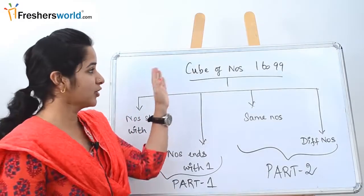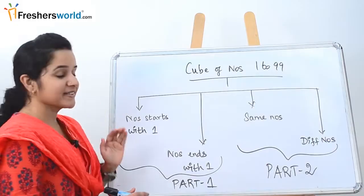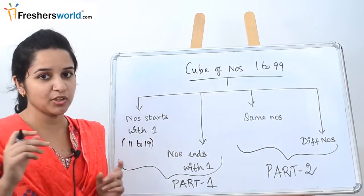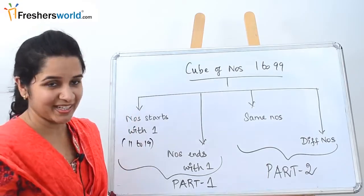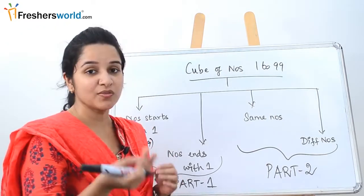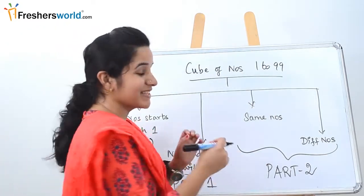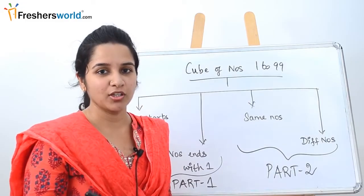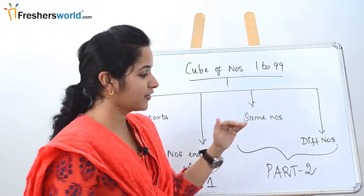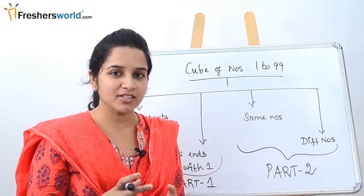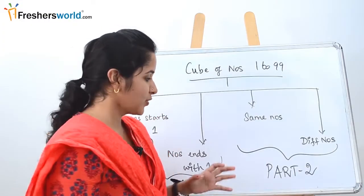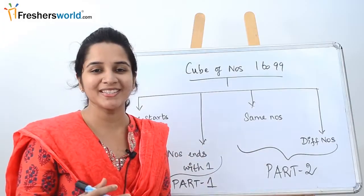We have 4 ways of solving cube numbers. They are split as follows: numbers starting with 1 (like 11 to 19), numbers that end with 1 (like 21, 31, 41), same numbers (like 22, 33, 44), and different numbers (like 23, 42, 83). This is split into 2 parts for better understanding.